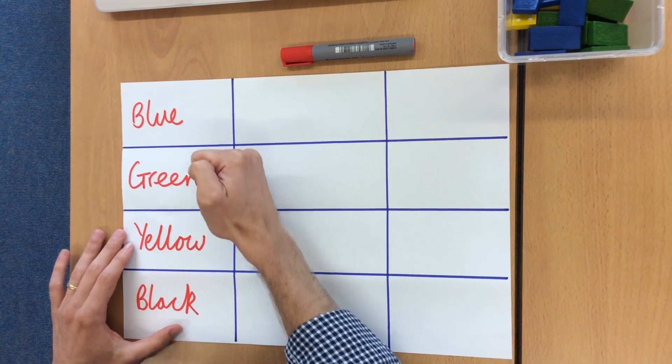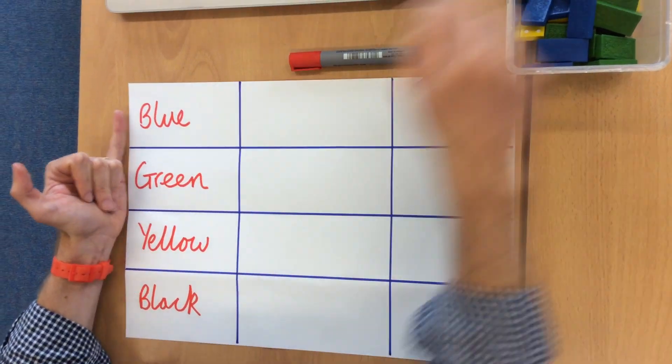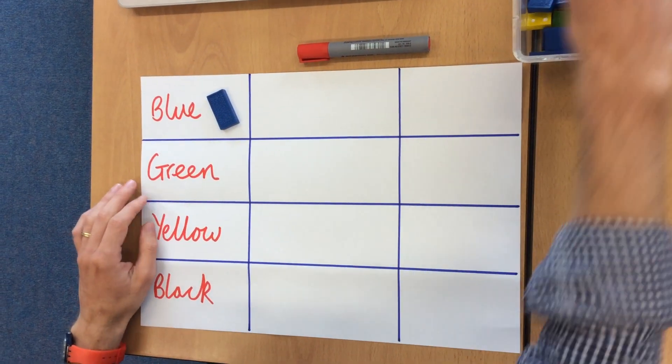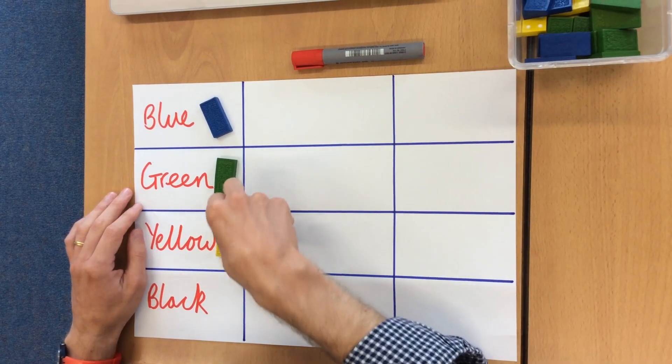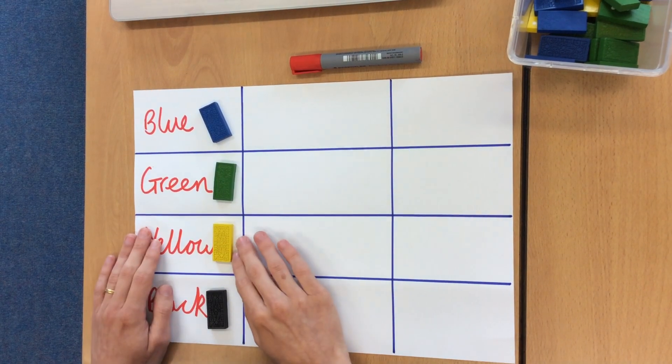In your first column, you will write down the colour or the size or whatever you are looking at, so I am going to be looking at blue dominoes, green dominoes, yellow dominoes, and see if you can find one, black dominoes. This is what I am going to be looking at today.